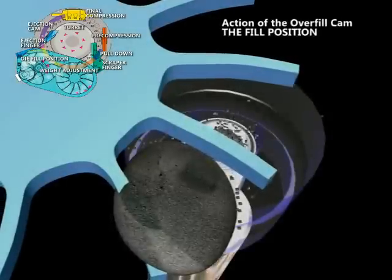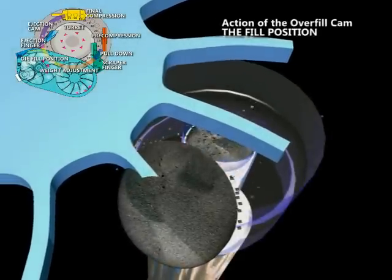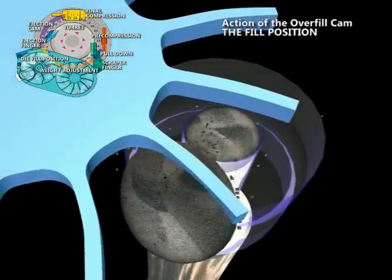At the fill position, the lower punch is pulled down by the fill cam as the die is passing under the feed frame. The product enters the die bore by gravity.